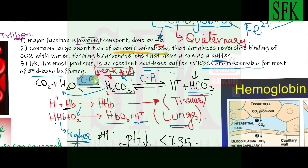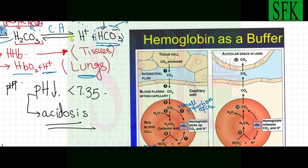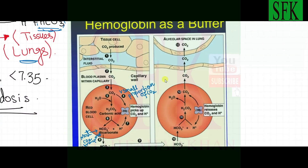Inside the red blood cells, carbonic anhydrase catalyzes the combination of carbon dioxide with water to form carbonic acid. This weak acid dissociates to form H+ ions and bicarbonate ions (HCO3-). The bicarbonate ions are the major form of carbon dioxide transport — they diffuse out of the red blood cells into the blood plasma and are transported to the lungs.